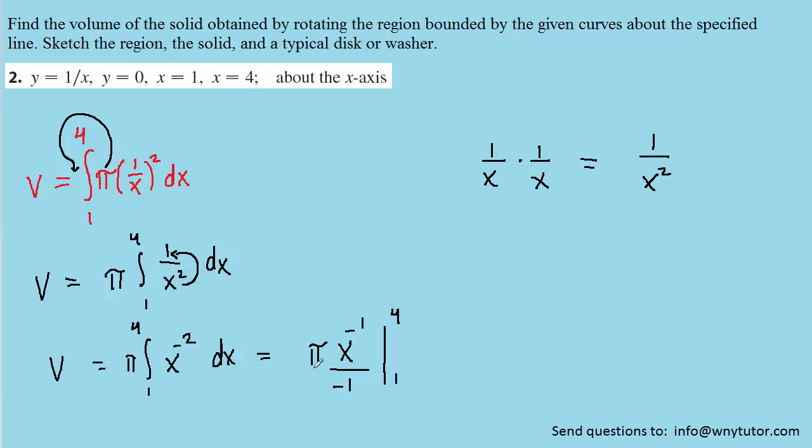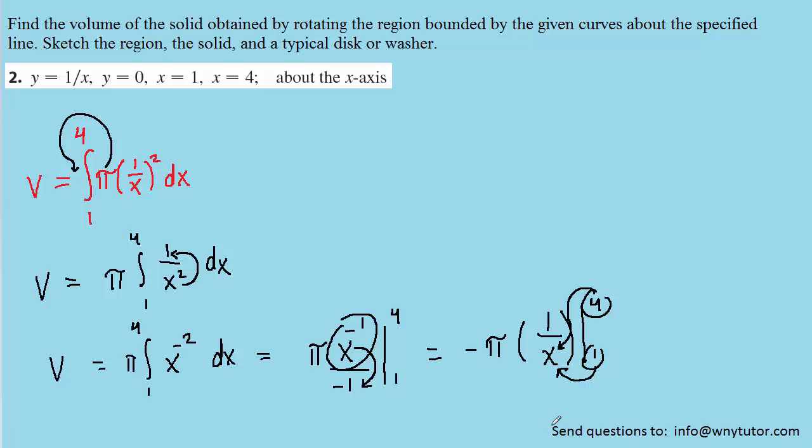We could then clean it up just a little bit. Pi divided by negative 1 would be negative pi. And then this x raised to the power of negative 1 can be written as 1 over x. That's the same rule as before. We're basically switching the x to the denominator. And when we do that, we're going to change that negative 1 exponent to a positive 1. We'll go ahead and plug in the upper limit of integration in for x first, and then the lower limit second. And then of course we subtract those results. Now 1 fourth minus 1 is going to give us negative 3 fourths. And then when we multiply negative pi by negative 3 fourths, we're going to get a positive 3 pi over 4. And that turns out to be the volume of that region that we obtained by rotating around the x-axis.